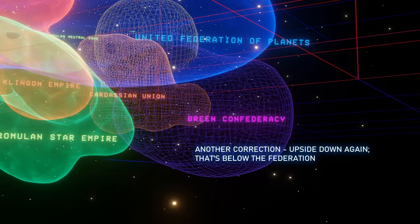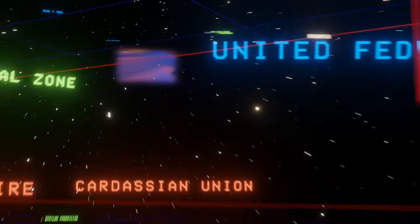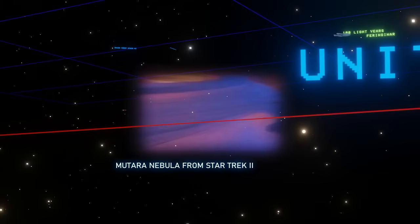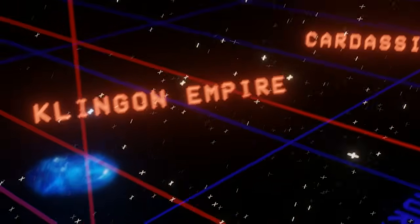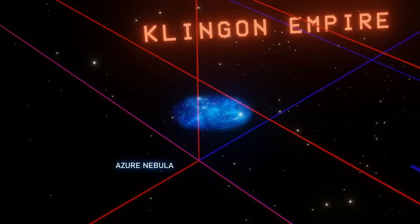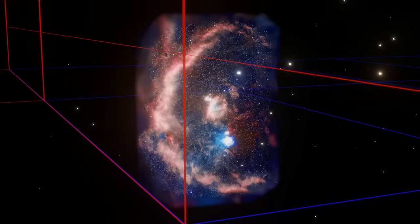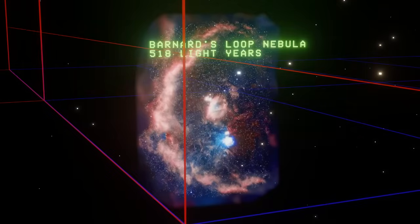Now that we have the more or less major features of the Alpha and Beta Quadrants covered, things like real-life nebulae may be of some importance. Nebulae are encountered quite frequently in Star Trek, such as the Mutara Nebula and the Azure Nebula. In real life, something like the Barnard's Nebula, or Barnard's Loop, starts at about 518 light-years distance. And that's pretty far from where most Star Trek stories take place. This means all these nebulae are probably pure fiction.